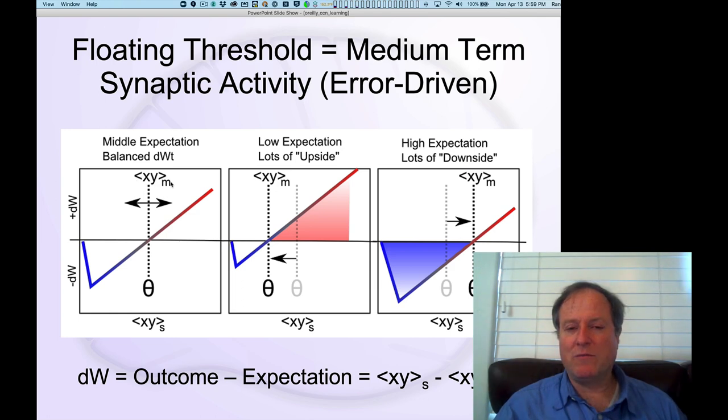M refers to both the minus phase and a medium-term level running average. So conceptually it's a minus phase, this is the thing we're going to be moving away from.